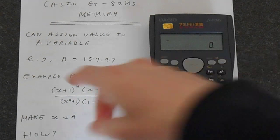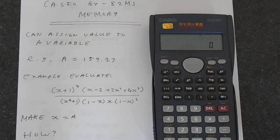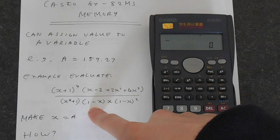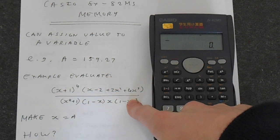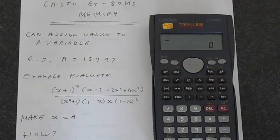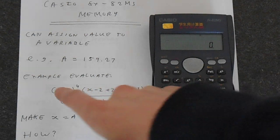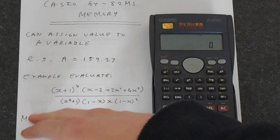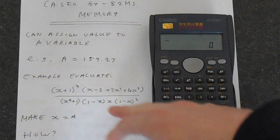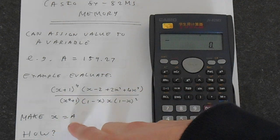For example, we could make A equal to 159.27, so if we were using this repeatedly, we wouldn't have to keep typing that in. For example, imagine you were trying to evaluate this. Instead of typing out some big number every single time for every single time that X appears, or going through the multiplications, which would be a complete nightmare, you could just make X equal to, say, the variable A.